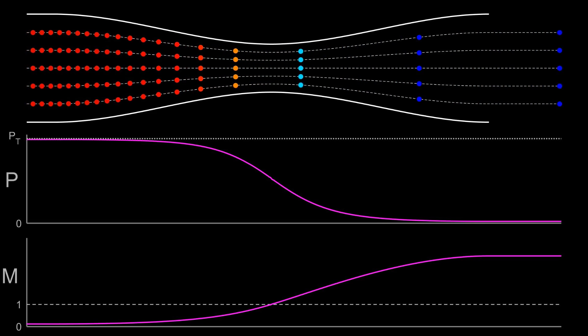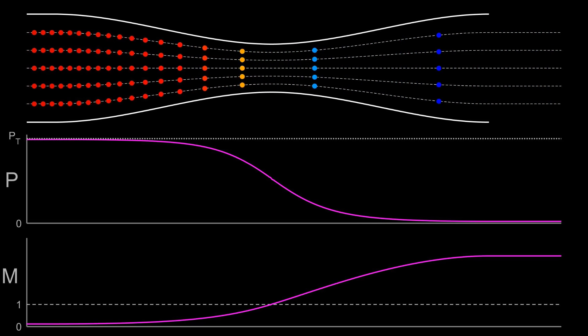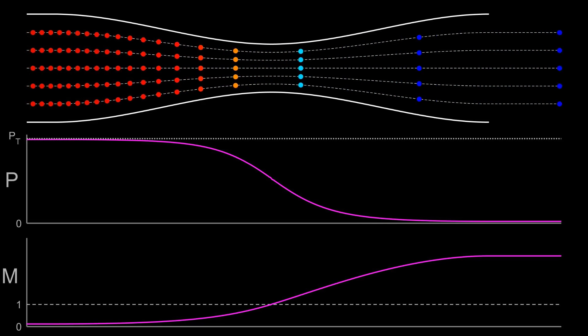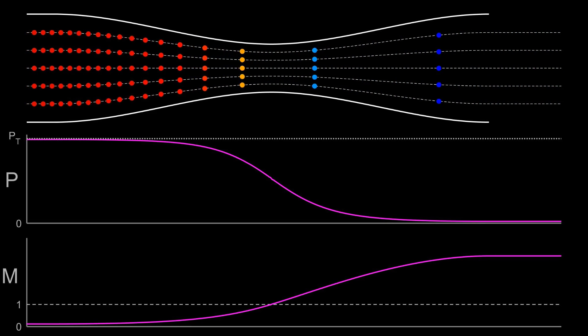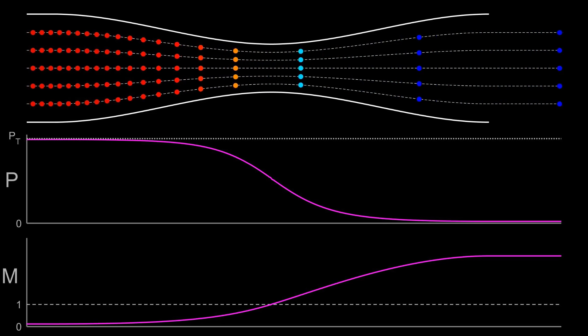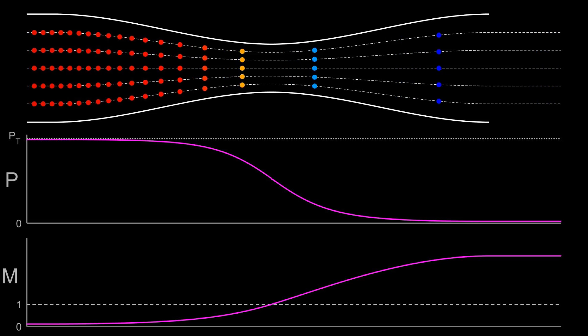The effect of a downstream pressure reduction when the throat is already choked is to remove the particle collisions from the right-hand side. No particle collisions means no communication method. The Mach 1 flow essentially fills a vacuum to its right.